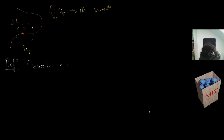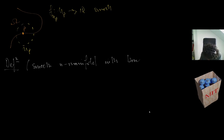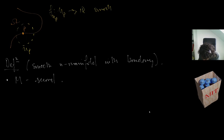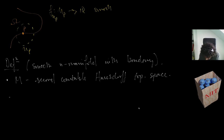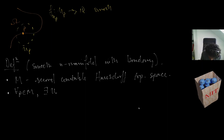With that, let me define a smooth n-dimensional manifold with boundary. M is a second countable Hausdorff topological space, and for all p in M there exists an open set U_p and an injection satisfying one of the following conditions.